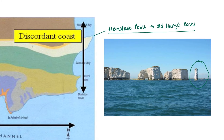That stump is formed through the weathering of the top of the stack and the undercutting at the base. The stack in this case is called Old Harry's Wife. So that's caves, arches, stacks and stumps — otherwise known as Old Harry's Rocks at Handfast Point.